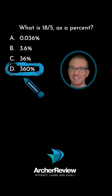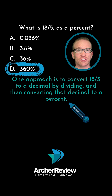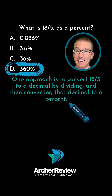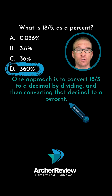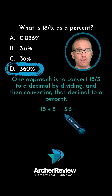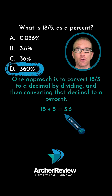If you selected D, you are correct. One approach is to convert 18 over 5 to a decimal by dividing. We will then take that decimal and convert it to a percent. 18 over 5 — 18 divided by 5 is equal to 3.6.